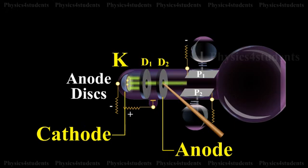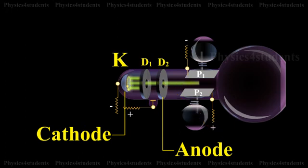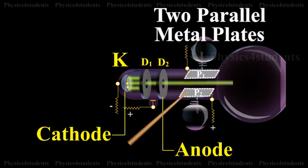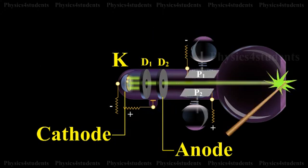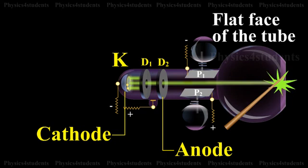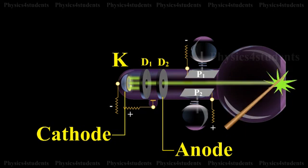The cathode rays then pass between two parallel metal plates P1 and P2 and strike the flat face of the tube. This face is coated with suitable fluorescent material.